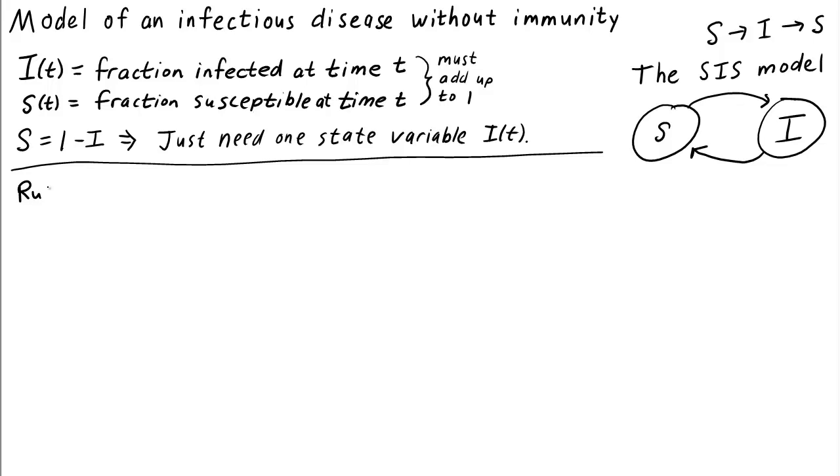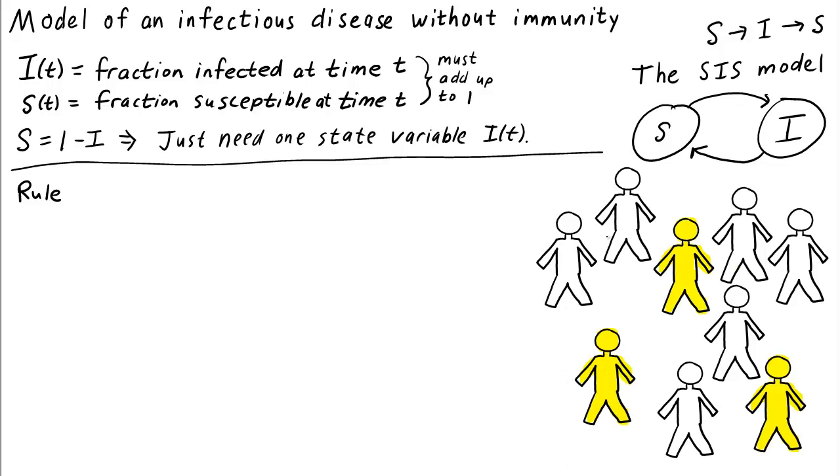The next step is to come up with a rule that describes how susceptible people can become infected, and how infected people can recover and become susceptible once again. Let's imagine we have a population of people, as illustrated by these little guys. The yellow people represent infected individuals, and the white characters represent susceptible individuals. The idea is that a susceptible individual cannot become infected all alone. In order for a susceptible person to become infected, they must encounter an infected person.